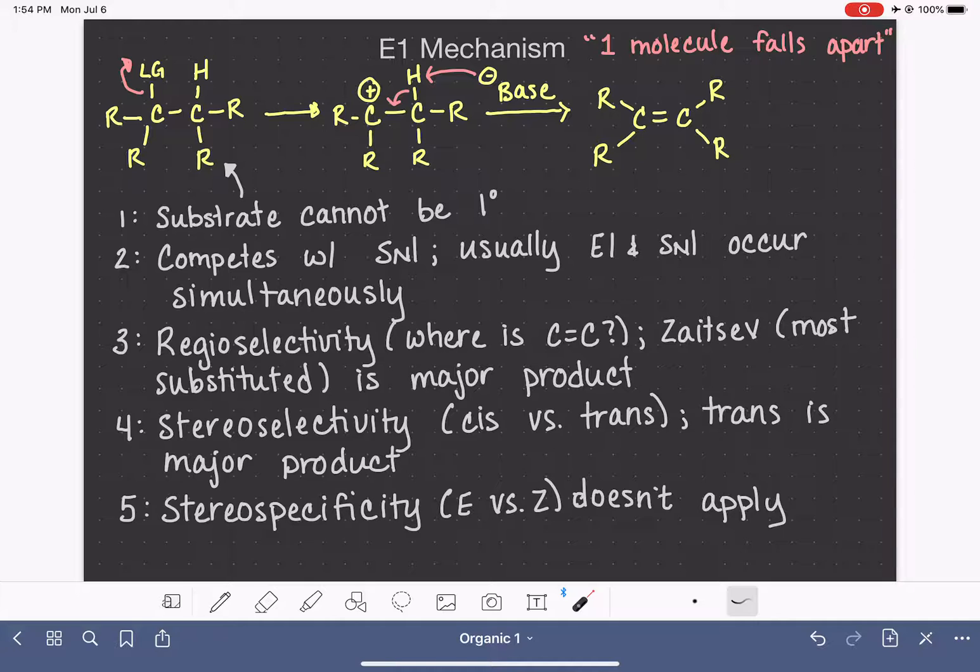In the E1 mechanism, the leaving group falls off first, creates a trigonal planar carbon, and then the hydrogen falls off second. So there doesn't need to be any specific relationship between the position of the hydrogen and the leaving group. In fact, they don't even need to be on adjacent carbons, which we'll see in some examples. So anti-coplanar configuration is not necessary, and stereospecificity is not at all something that we need to think about.